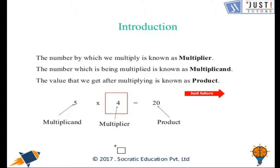And the number which is being multiplied is multiplicand. So 5 is multiplicand. And when multiplication is done our answer is product. That is the final answer. So here 20 is product.